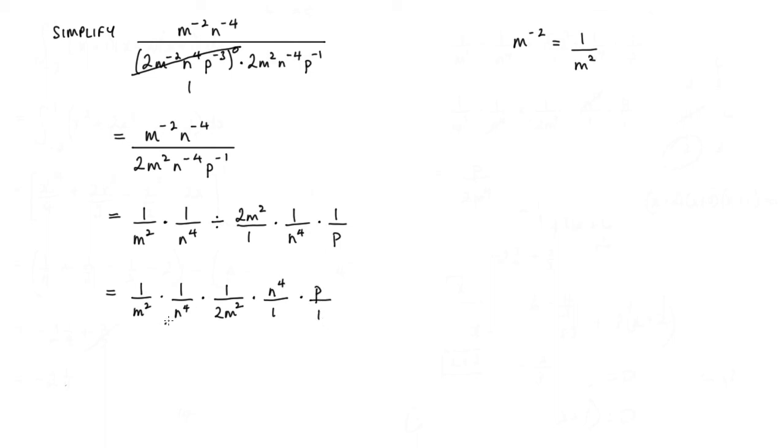Now this n to the power of 4 will cancel with this one. And hopefully you can see what we're left with. In the numerator, we've got just p. And in the denominator, we've got m squared times 2m squared, which is 2m to the power of 4.